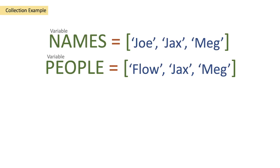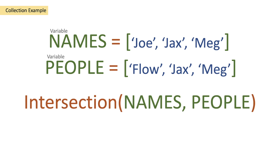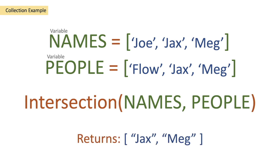So let's actually take a look at the collection example. We've got a names array of Joe, Jacks and Meg, and we've got a people array of Flo, Jacks and Meg. As you can see, the only difference is Joe and Flo. When we pass in our names and people arrays into intersection, it's going to look at what actually occurs in both and produce a third array — giving us back Jacks and Meg because they appear in both. So it's an easy way of comparing and retrieving what actually occurs in both arrays.